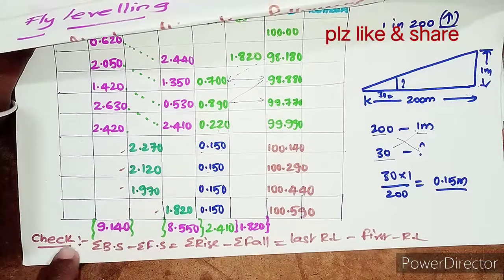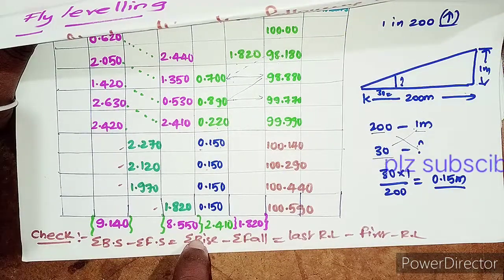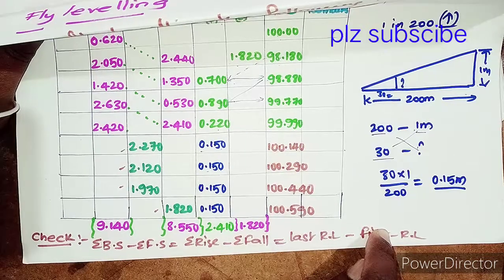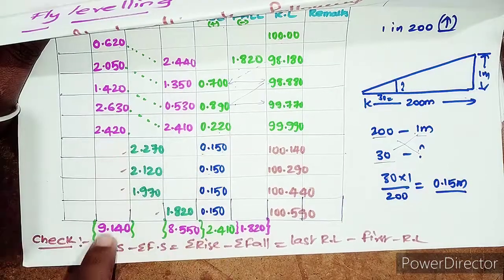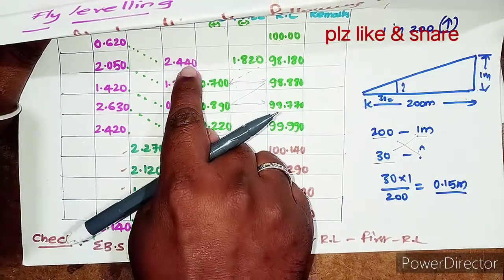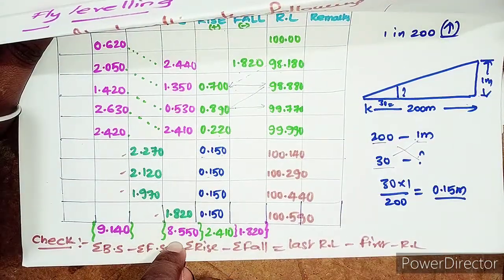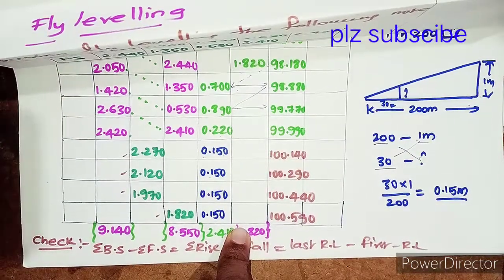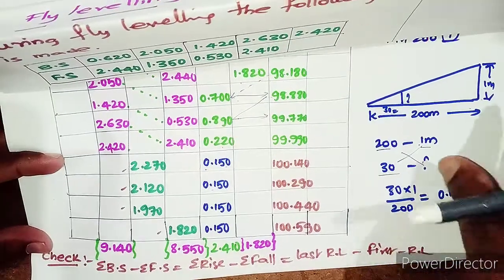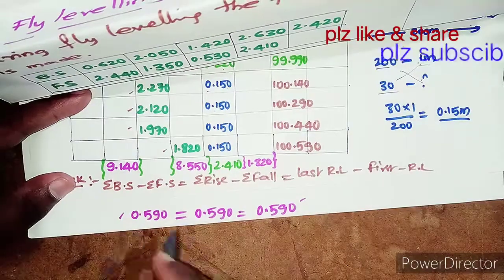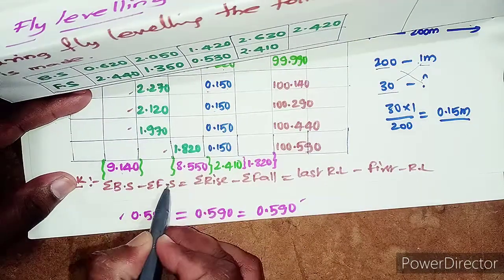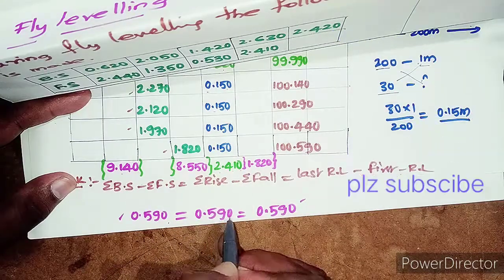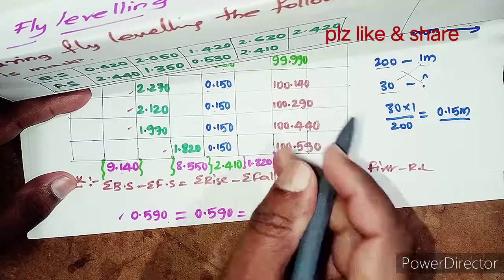To verify, the mathematical check for the Rise and Fall method is: ΣBacksight − ΣForesight = ΣRise − ΣFall = Last RL − First RL. Sum of backsights = 9.140, sum of foresights = 8.550, difference = 0.590. Sum of rise = 2.410, sum of fall = 1.820, difference = 0.590. Last RL = 100.590, first RL = 100, difference = 0.590. All three match, confirming the calculation is correct.